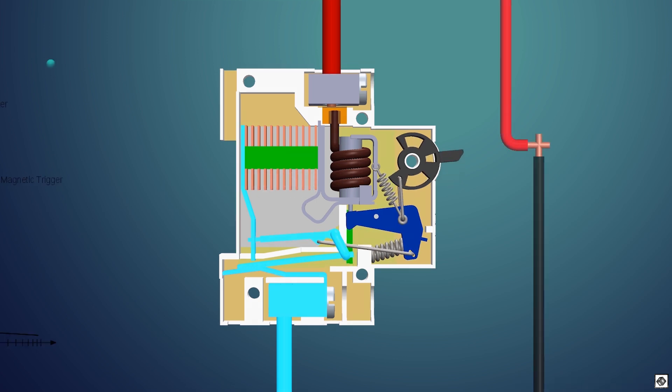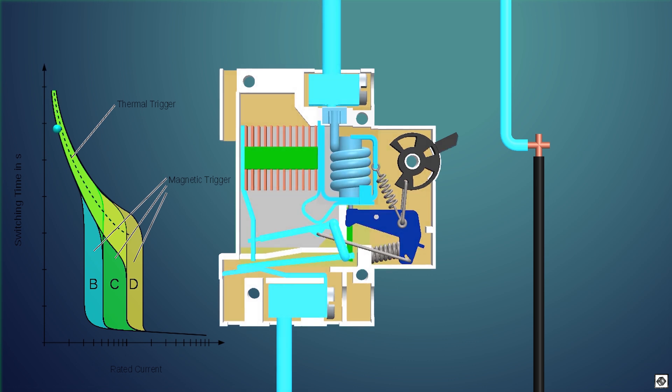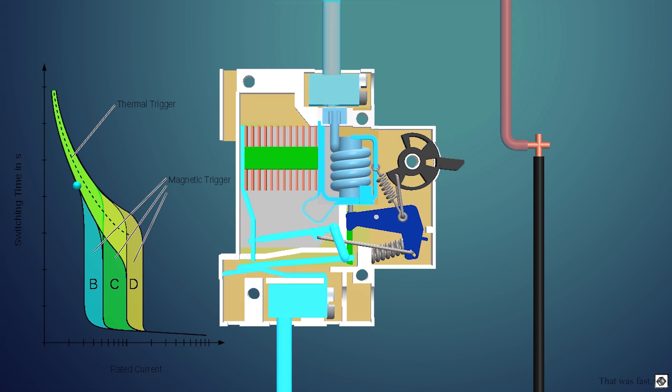Now, let's see the short circuit situation. In a short circuit, a large amount of current flows through the MCB. As the current flows through the solenoid, it creates a strong magnetic field. This magnetic field pushes the pin placed in the solenoid.